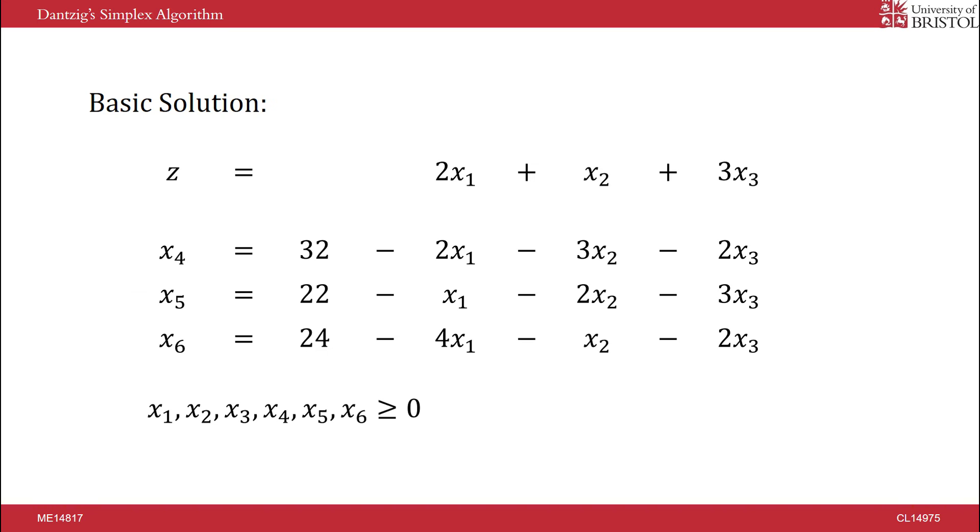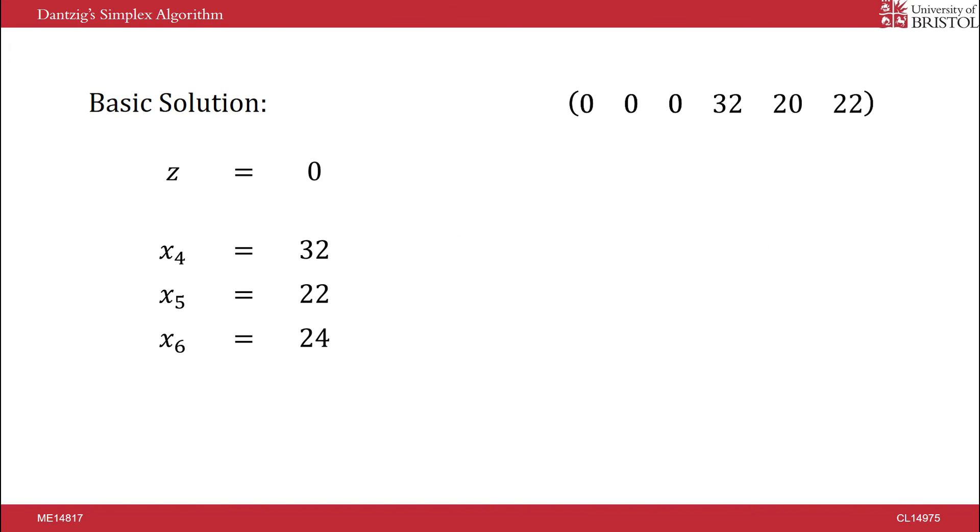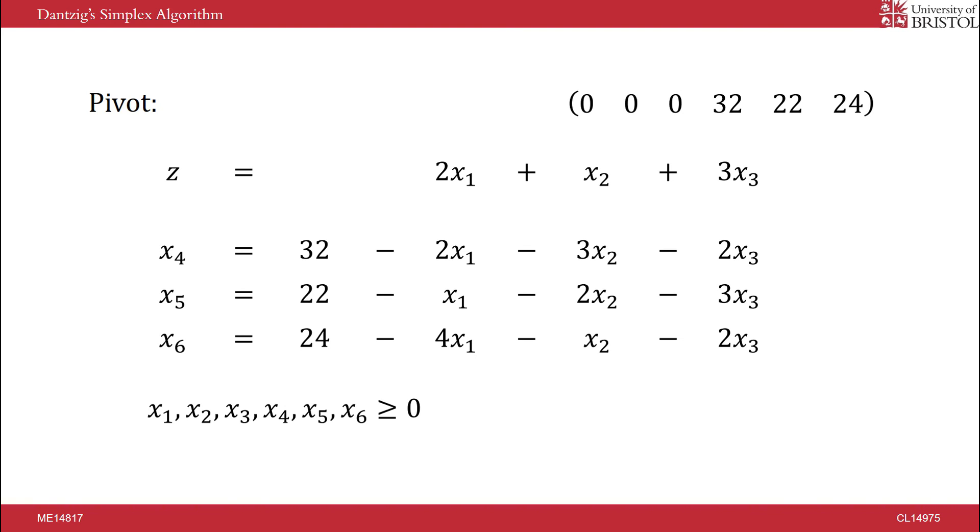The basic solution is derived by setting all non-basic variables to 0. The simplex algorithm assumes this is a feasible solution, as in it does not break any of the constraints. From the basic solution, our goal is to find a way to increase the value of the objective function. The method used by the simplex algorithm is called a pivot, which works as follows.